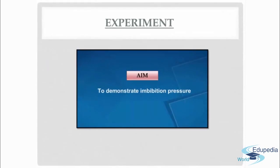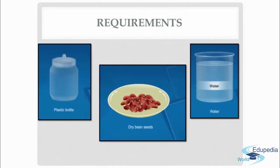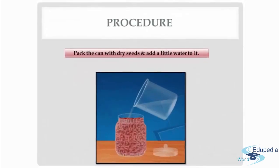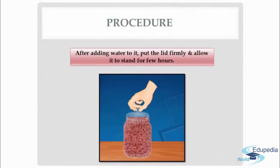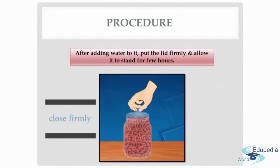The aim of this experiment is to demonstrate imbibition pressure. The requirements for this experiment are a plastic bottle, dry bean seeds, and water. The procedure: first, we have to pack the can with dry seeds and add a little water to it. After you have done this, put the lid firmly — tightly pack the can — and allow it to stand for a few hours.